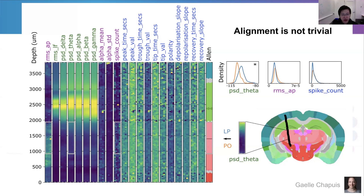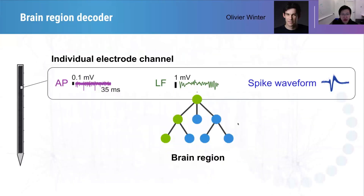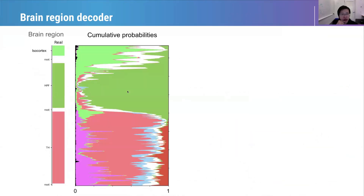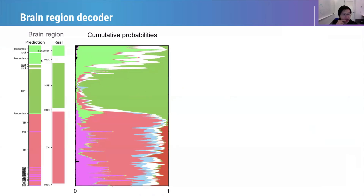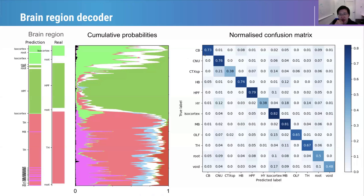Therefore, by knowing those features, we can correctly assign different region identity in our recordings. Moreover, we can utilize those ephys features to decode the brain region only based on electrophysiology. Olivia in the collaboration built a decoding model using AP, LFP, and spike waveform to decode brain regions. Here is the decoding result — as you can see, it very well captures the overall pattern of brain regions. You can see that for almost all major brain structures, the decoding model based on ephys features very well helps us to classify different brain regions.